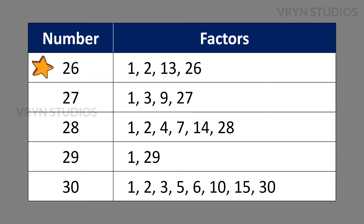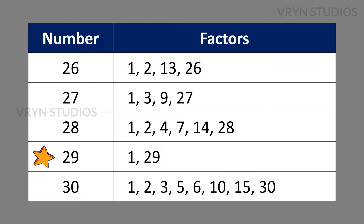The factors for the number 26 is 1, 2, 13 and 26. The factors for the number 27 is 1, 3, 9 and 27. The factors for the number 28 is 1, 2, 4, 7, 14 and 28. The factors for the number 29 is 1 and 29. The factors for the number 30 is 1, 2, 3, 5, 6, 10, 15 and 30.